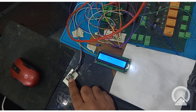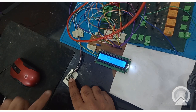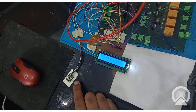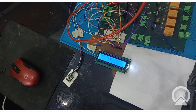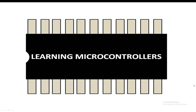You have to maintain the distance between the LED and the sensor. The square-type sensor is where you place your finger, and the LED over there is sending the infrared radiation. You have to keep the distance maintained. You can make a device out of it or something like that.